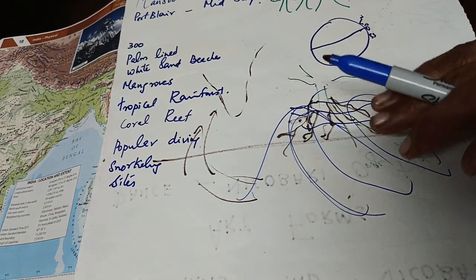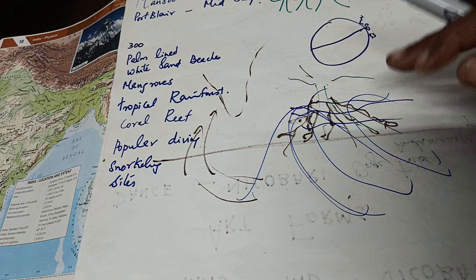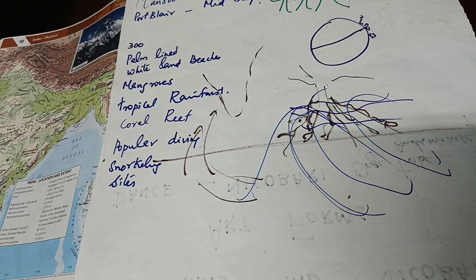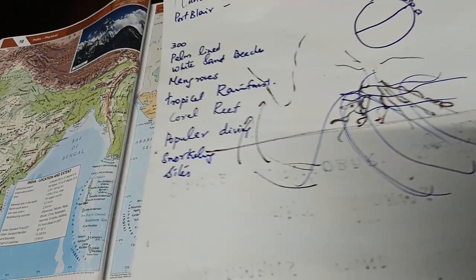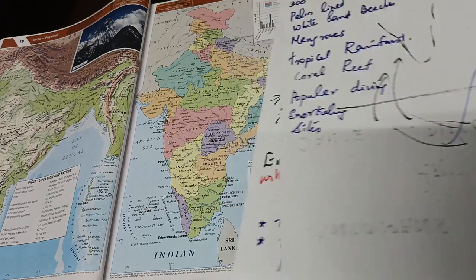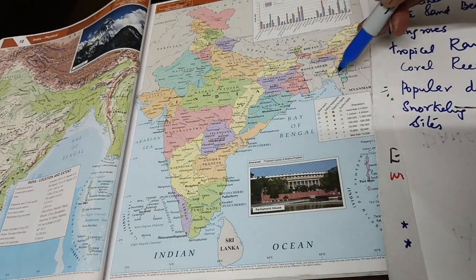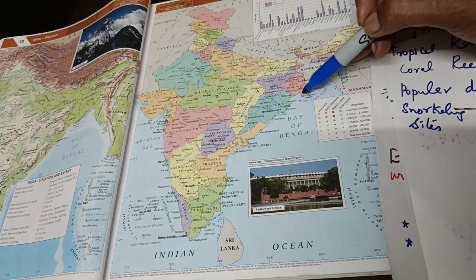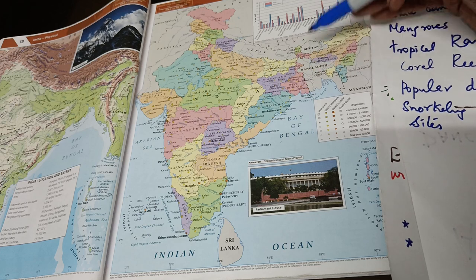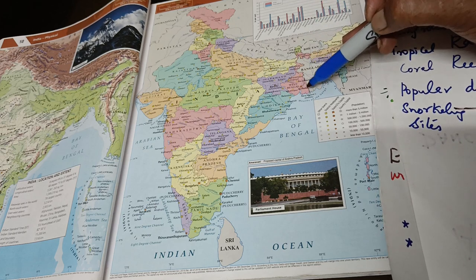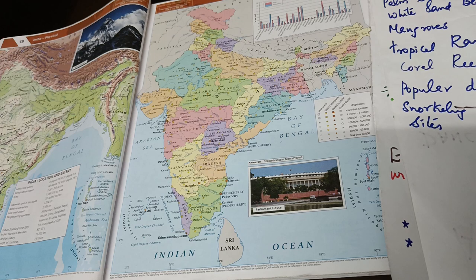Bangladesh is nearby, and next to that is India's West Bengal. Even though that area is famous for mangrove forest, this part — as it is in the Indian continent — is also famous for mangrove forest, as the roots can survive even in water.